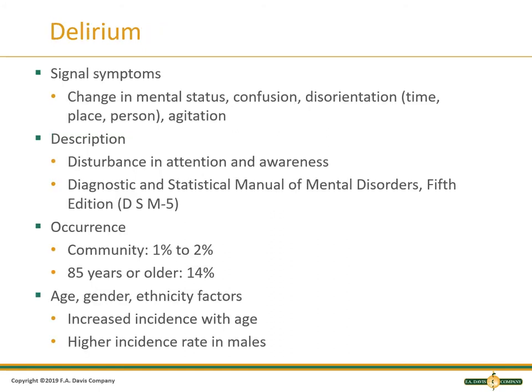When we talk about delirium, we look at the signal symptoms: the change in mental status, the confusion, disorientation, and we're looking at time, place, and person. We also look at agitation, which we talked about last week — are they having those episodes, and have you found a metabolic cause, or is this more psychosocial?